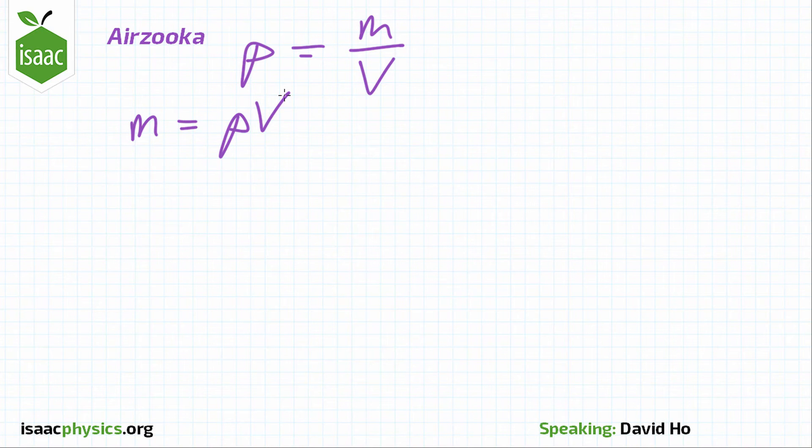The other information that we're given is the density of air, rho is equal to 1.2 kilograms per meter cubed, and we're also given the volume of the air pocket, that is V is equal to 2 liters, which is the same as 0.002 meters cubed.